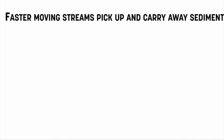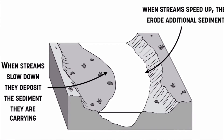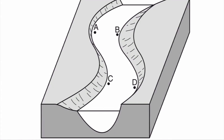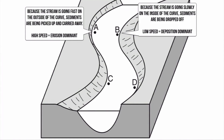Tying this back to erosion and deposition: faster moving streams pick up and carry away sediment — that's erosion. When streams slow down, they drop off sediment — that's deposition. In a curved stream, the inside of a curve is slowing down, so sediment is deposited there. The outside of a curve is speeding up, so erosion is dominant there. This creates an erosion and depositional system throughout the stream channel.